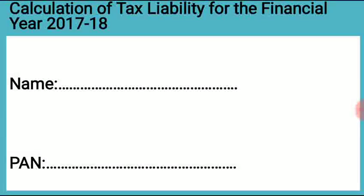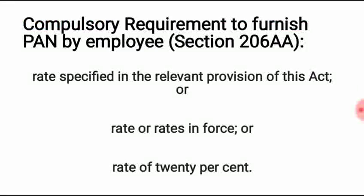First, a government employee will file his name in the tax liability sheet, after which he will write his PAN number. PAN means Permanent Account Number. PAN number is very important because if a government employee has not given a valid PAN number, then the salary income is taxed at the rates in force or the rate of 20%, whichever is higher. If your income is 5 lakh rupees, the tax will be at the rate of 5% from 2 lakh 50,000 to 5 lakh.